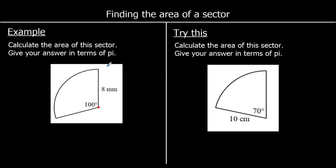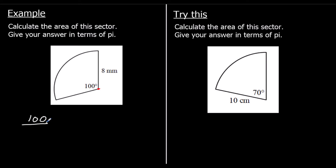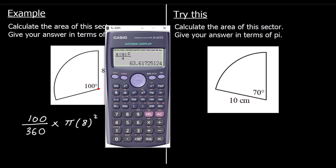We've got a fraction of a whole circle again. So what fraction do we have? We've got 100 degrees out of a total — a whole circle has 360 degrees. So we're going to say we've got 100 three-hundred-and-sixtieths of the whole circle. So this fraction of the area of the whole circle, which is pi times the radius squared. And we can type that into the calculator.